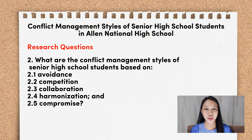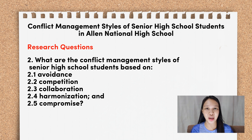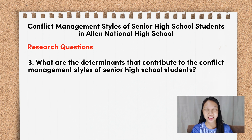Research question number two: What are the conflict management styles of senior high school students based on 2.1 avoidance, 2.2 competition, 2.3 collaboration, 2.4 harmonization, and 2.5 compromise? And lastly, what are the determinants that contribute to the conflict management styles of senior high school students?